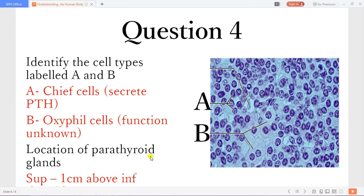So the location of the parathyroid gland. The superior parathyroid glands are a centimeter above the inferior thyroid artery. While the inferior parathyroid gland will be a centimeter below the inferior thyroid artery. So the inferior thyroid artery is the landmark. And if you go a centimeter above you get the superior parathyroid glands. And a centimeter below you find the inferior parathyroid glands. And so these will be found behind the thyroid gland.